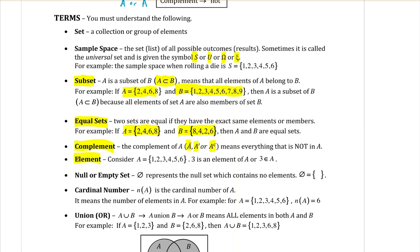Element. An element is the things that are in our set. So if our set is A equals 1, 2, 3, 4, 5, 6, 3 is an element of that set and it can be written like this: 3 is an element of A.